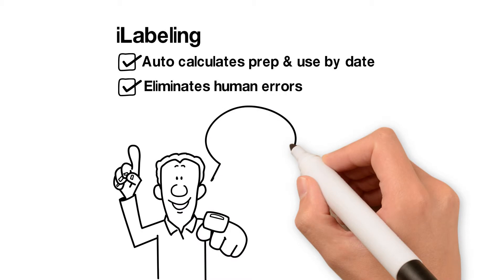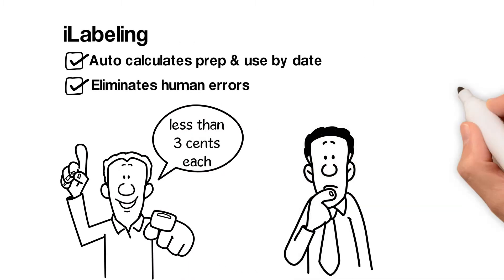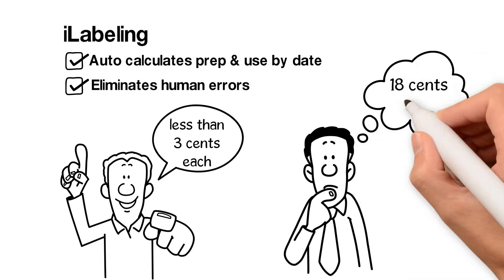Actual labels may cost as cheap as under three cents each compared to blank shelf life labels that may cost up to 18 cents each.